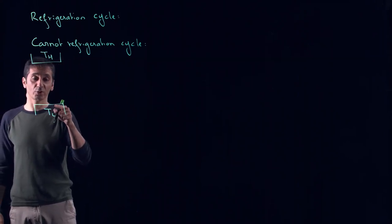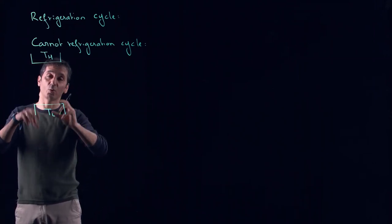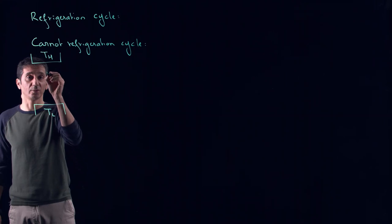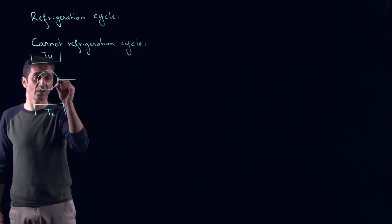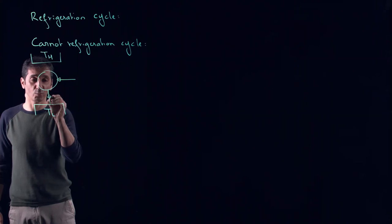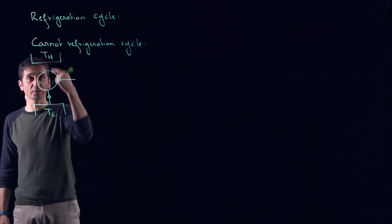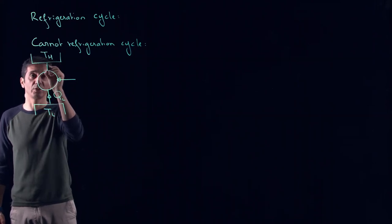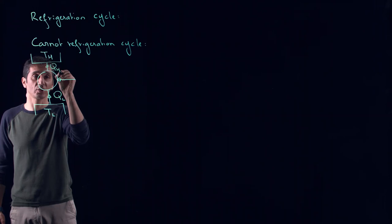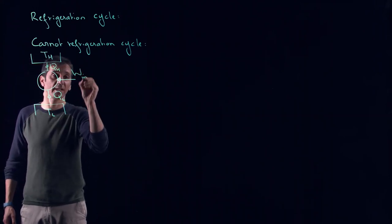And our role in refrigeration cycle is to get heat out of the cold and send it to the hot. Clausius told us that the only way to do this, if you want to go against nature from cold to hot, and therefore extract a QL and reject it into a QH, there is a price to pay, and the price to pay is work in.